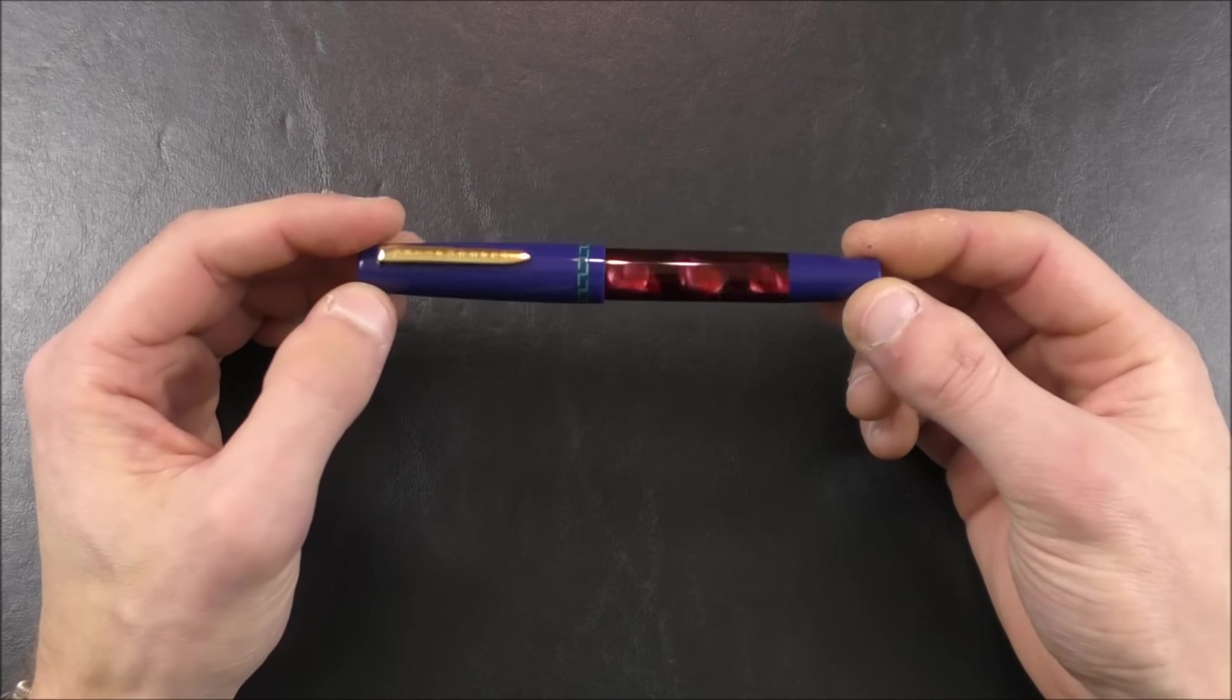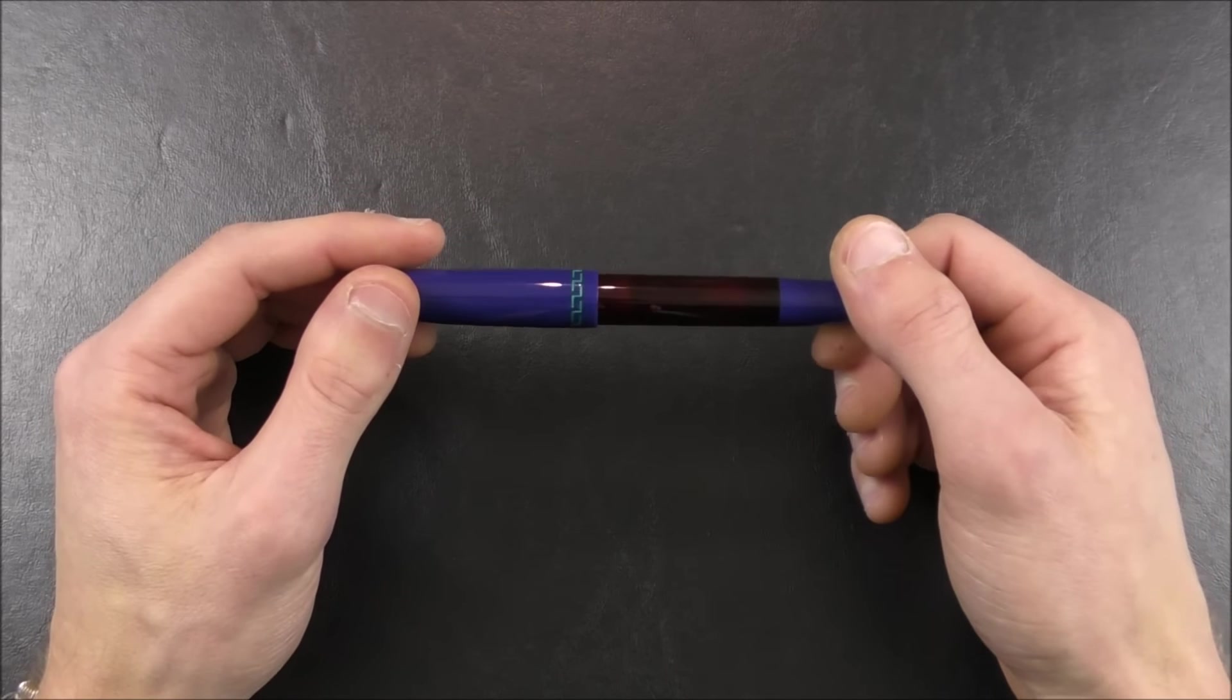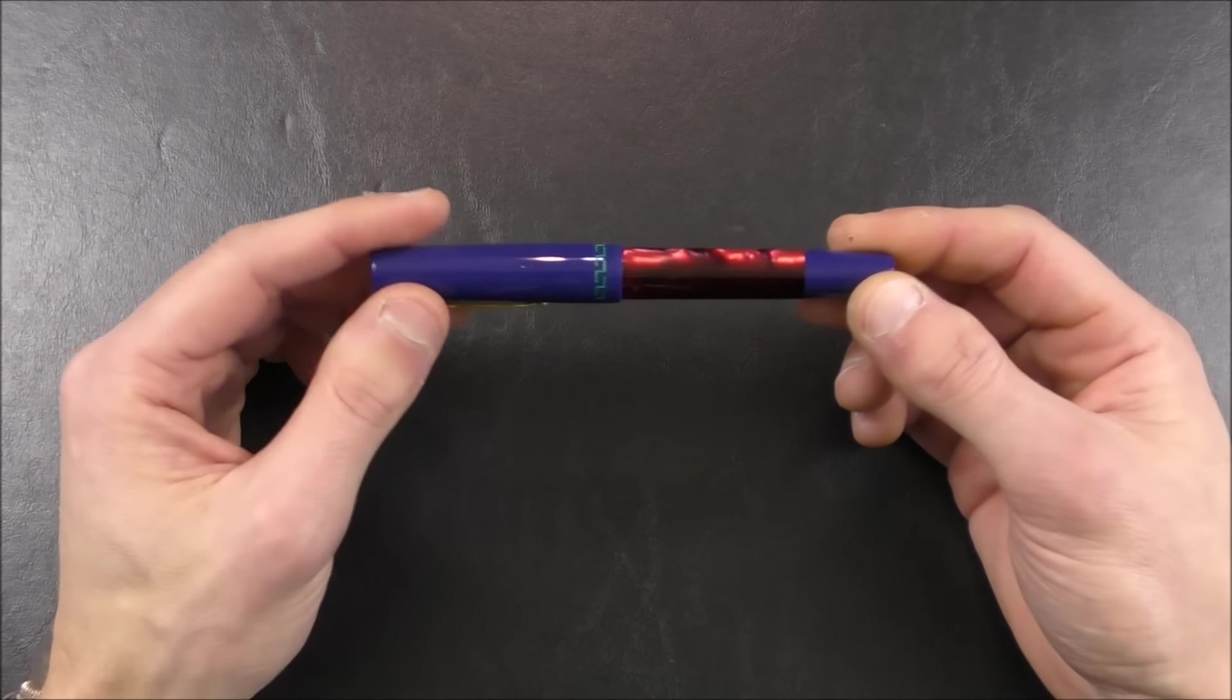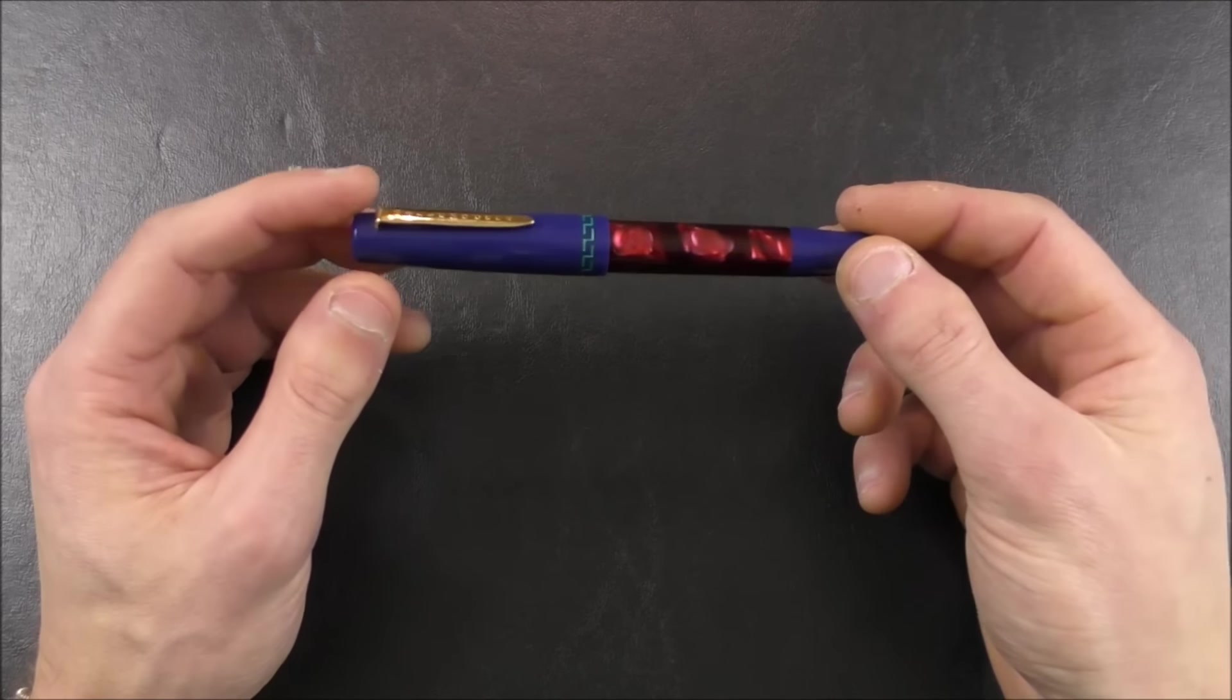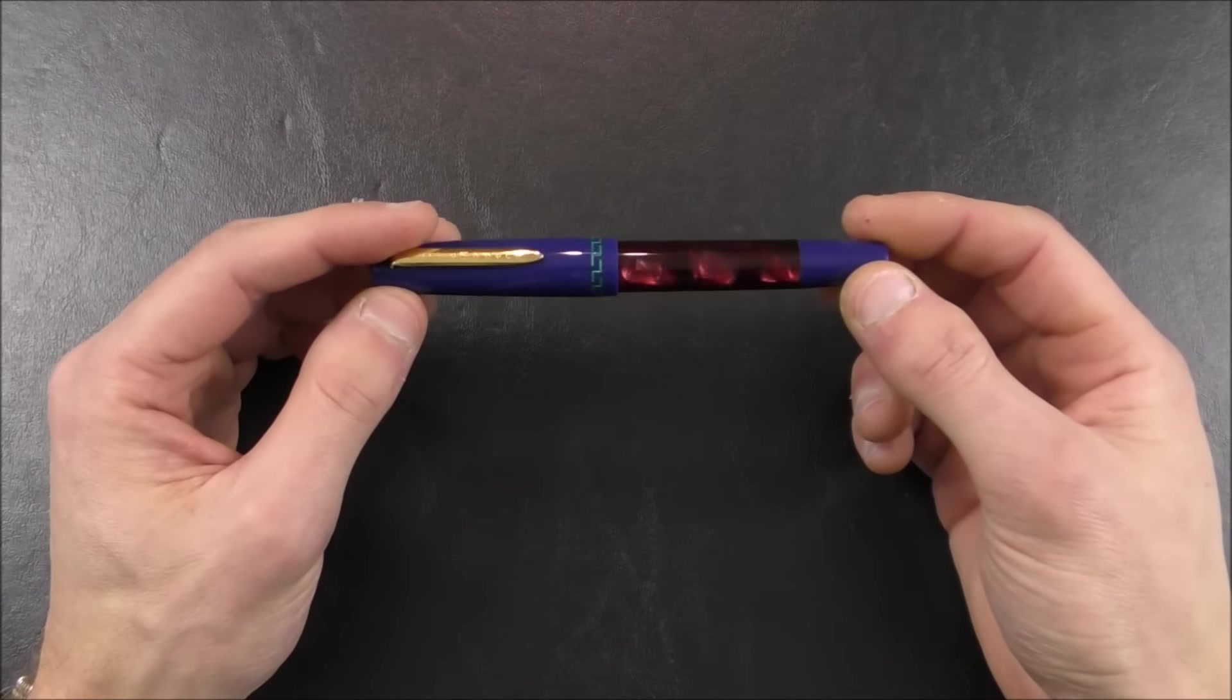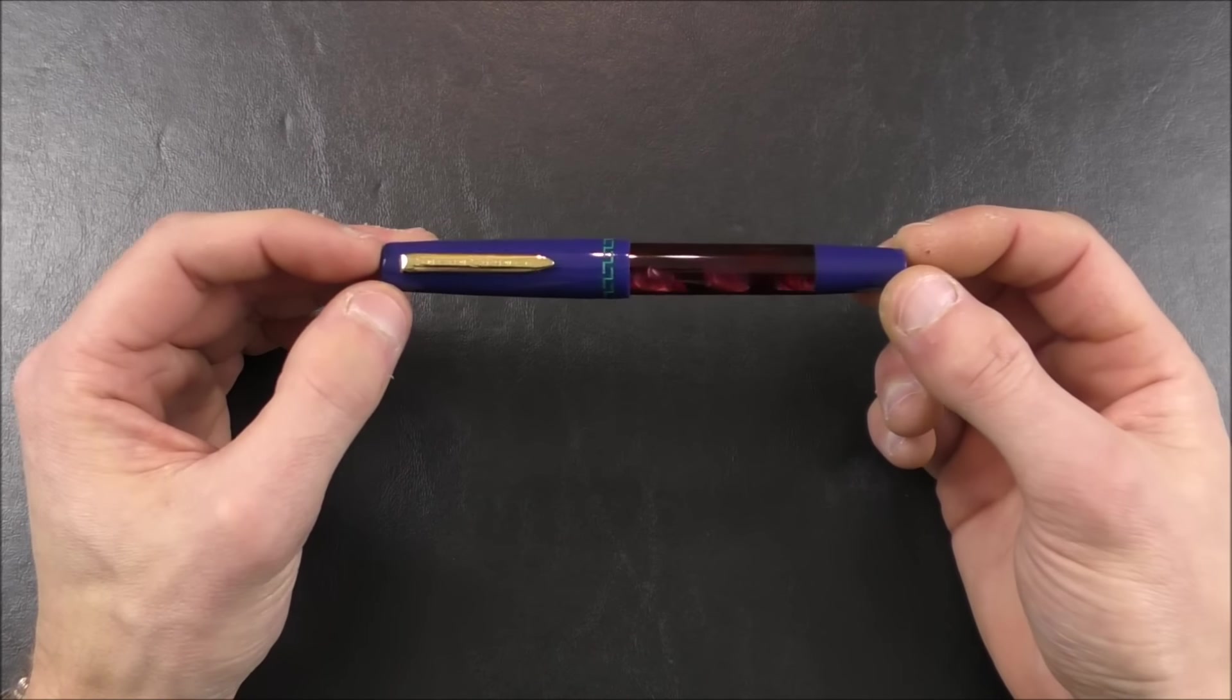Now, as I mentioned, this particular pen is the Citizen of Madrid, but there are many, many other cities to choose from. New York, London, lots of different international cities with all sorts of different color combinations. I will put in the description box below a link both to the Marte Modena website, and then also to the Citizen line, so you can check out all the different colors that they have. But let's try to do a little writing with this pen.